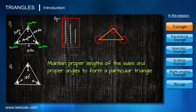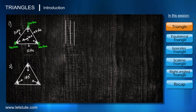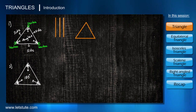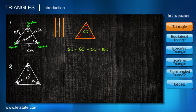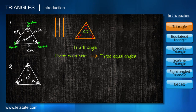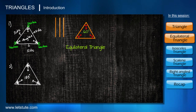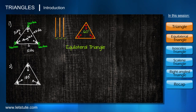We can't make just any triangle with three lines at any angles — we have to maintain proper lengths of sides and proper angles. Now let's take three equal line segments and form a triangle. When three equal line segments come together, they must make three equal angles. Each angle has to be 60 degrees, since all three angles always sum to 180 degrees. Such triangles are called equilateral triangles — 'equi' means equal and 'lateral' means sides.